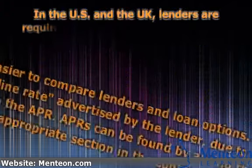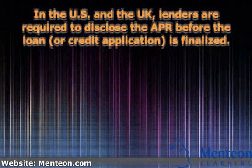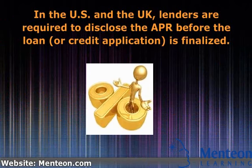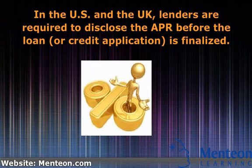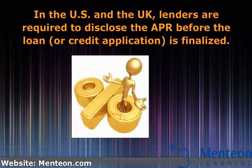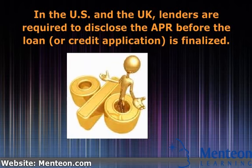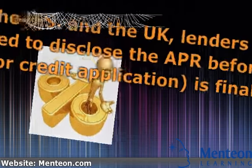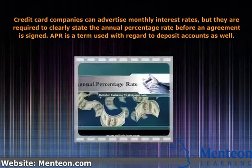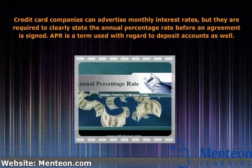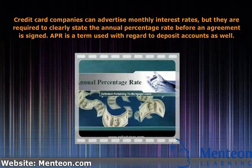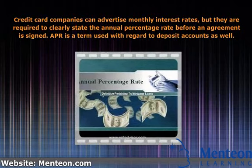In the U.S. and the U.K., lenders are required to disclose the APR before the loan, or credit application, is finalized, although the definition of APR is not the same in the two countries. Credit card companies can advertise monthly interest rates, but they are required to clearly state the annual percentage rate before an agreement is signed. APR is a term used with regard to deposit accounts as well.